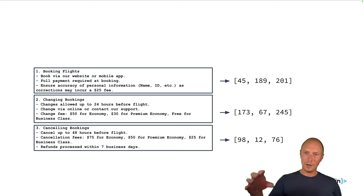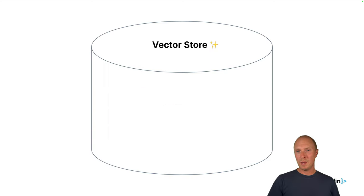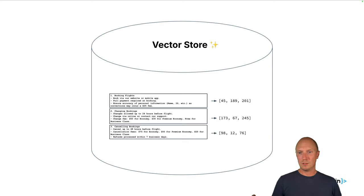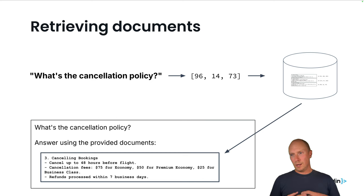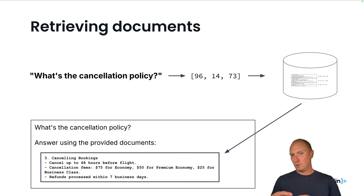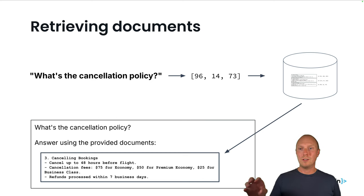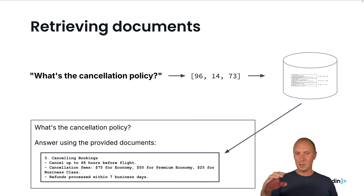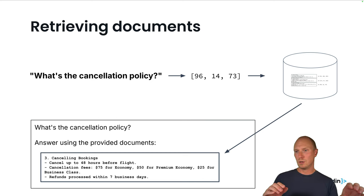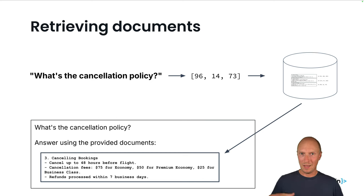So we've taken the text, gotten embedding values by calling an API that gives us this vector value, and we put those into a vector store — a database that's good at doing vector math. When a user asks a question like 'what's the cancellation policy?', we run that text through the same embedding model to get a vector representing the meaning of the question. We query our vector database for the most similar document related to cancellation, which should give us the cancellation section of our terms of service. Then we take our question and instruct the LLM to answer using that provided document — allowing it to give a really good, grounded answer.